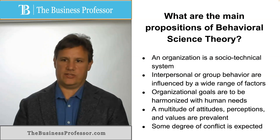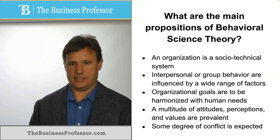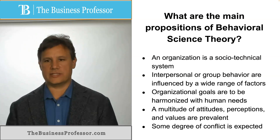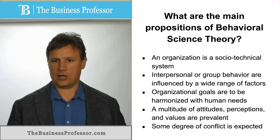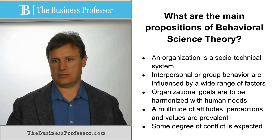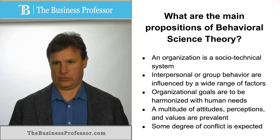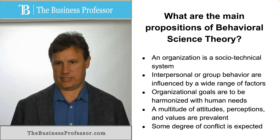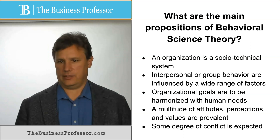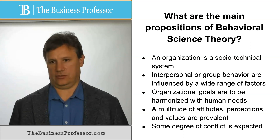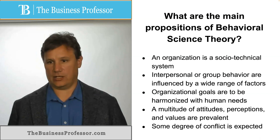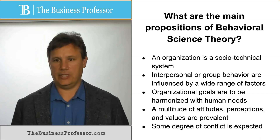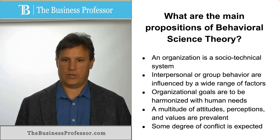The main propositions of behavioral science theory are that an organization is a socio-technical system, which basically means that part of the organization is the social systems — the relationships that exist between the people and the organizational structure — and then you have the technical aspect of the organization, so the technology that is being used and employed throughout the organization.